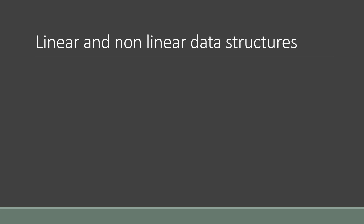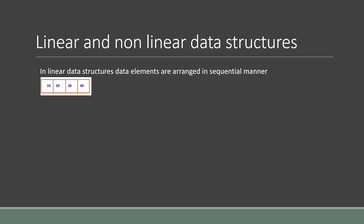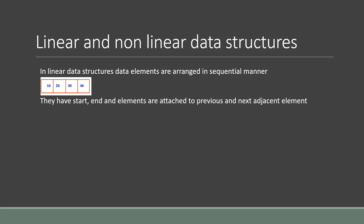Before starting with trees, let's first understand what linear and non-linear data structures are. A linear data structure is one in which data elements are arranged in a sequential manner. For example, in an array, data is arranged one after another — it has a start element, an end element, and other elements each with an adjacent previous and next element. Other examples of linear data structures are stack, queue, and linked list.